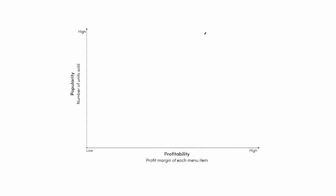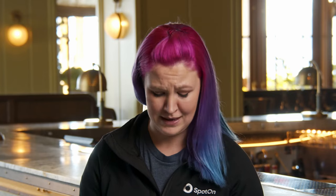We'll start with that burger we talked about before. We'll say that it costs us $4.50 to make it, but we sell it for $15. And for the sake of this, it's going to be one of the most popular menu items we have. We're going to drop a dot in where it should be. Every other item on the menu is also going to get a dot.